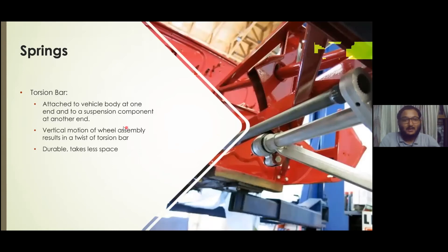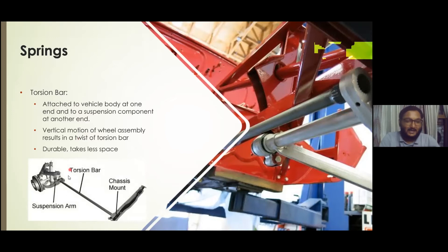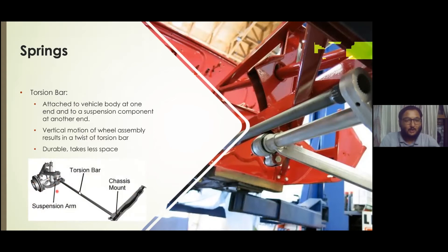The torsion bar is another type of spring which is attached at one end to the vehicle body and at the other end to the suspension system. The vertical motion of the wheel assembly results in the twist of the torsion bar. As we can see in the image, the torsion bar is connected to the chassis mount at one end and to the wheel assembly at the other. They are fairly durable and take up less space.